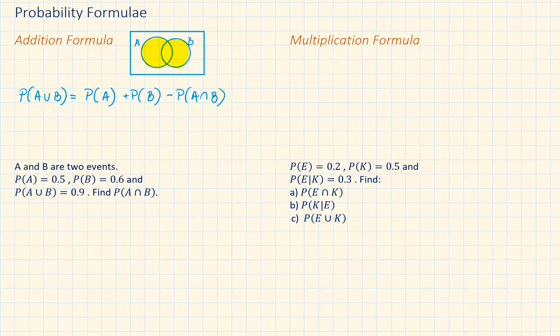Multiplication formulae. We can start the multiplication formulae by writing out the conditional probabilities of events A and event B. Probability of A given that B has already happened is equal to probability of A intersection B divided by probability of B.